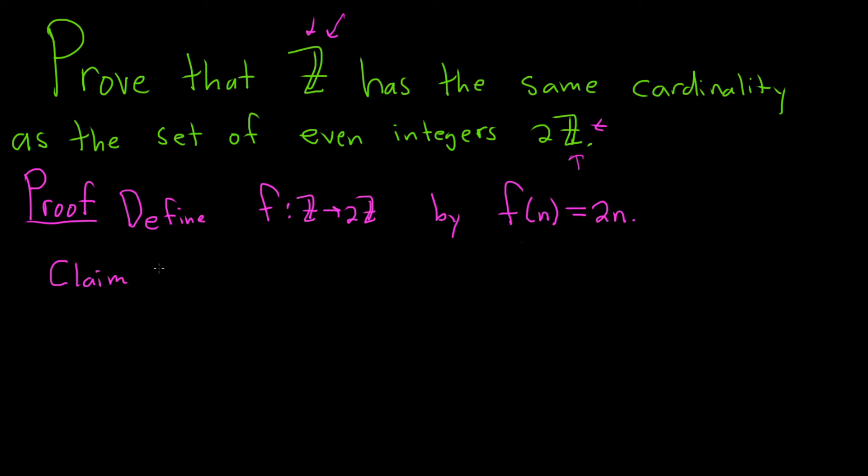Claim f is 1 to 1. I'm going to come over here on the side and recall what that means. f is 1 to 1 if whenever f of a is equal to f of b, then the inputs are the same, so a is equal to b. And this has to be true for all a, b in the domain. So to prove this, we start by assuming f of a is equal to f of b.